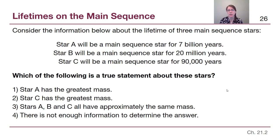And in fact, if we look at a set of main sequence stars, star A is a main sequence star for 7 billion years. That means that after it reached the main sequence, it turned hydrogen into helium in its core for 7 billion years. Star B is a main sequence star for 20 million years. And star C is a main sequence star for 90,000 years. So think back to what we mentioned just before. Which of the following is a true statement about these stars? So another pause and think question for us.